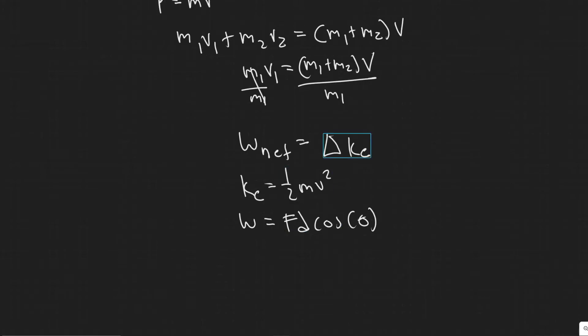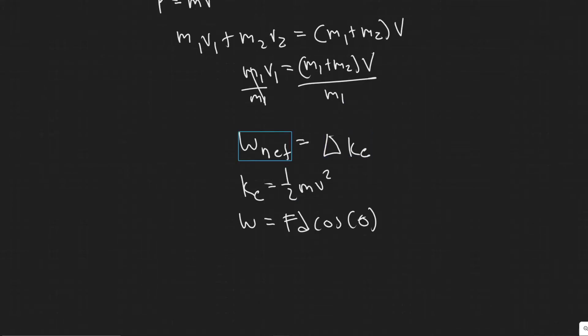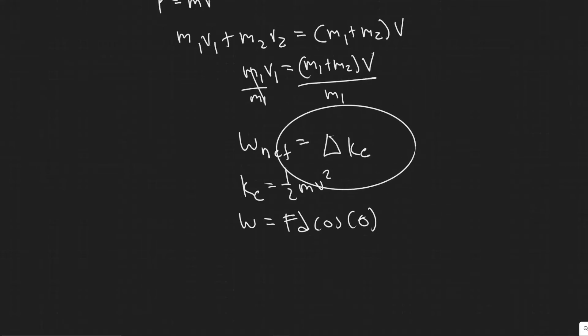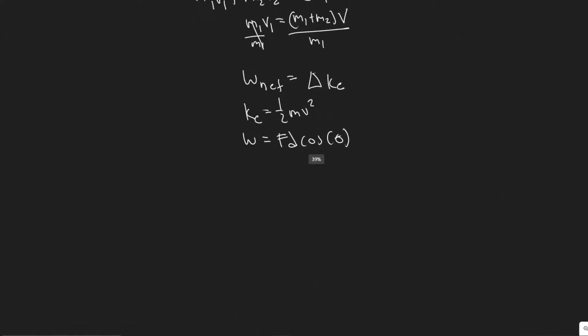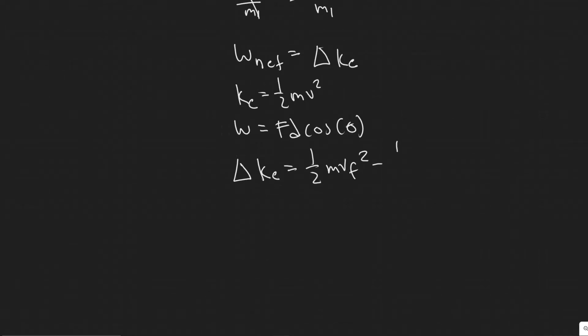What we're going to do is notice that V is what we're trying to solve for. We're going to solve for the V in the kinetic energy formula by setting these two formulas equal to each other — that gives us the V to plug back into the momentum equation.